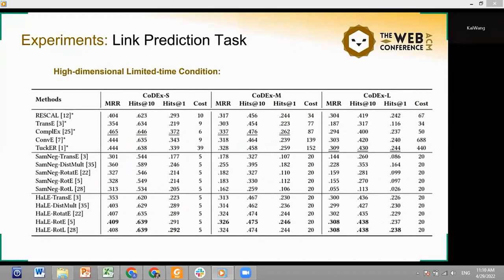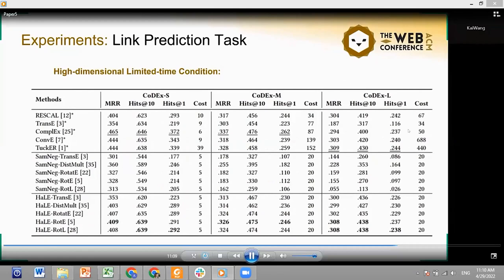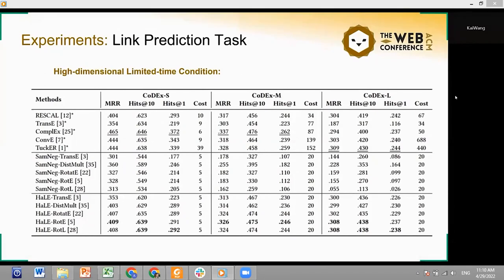We also conduct some experiments in the high-dimensional vector space on three different sizes of KGE datasets. The experimental results can also prove the advantages of the HEAL training strategy compared to the negative sampling loss. Especially on the CODEXL dataset, the Hits@10 metrics of HEAL trained models outperformed that of the fully trained KGE models, and the training time is much less than the latter.